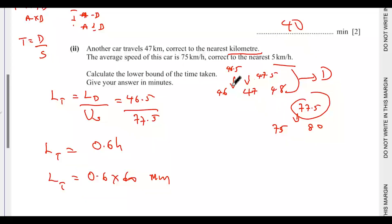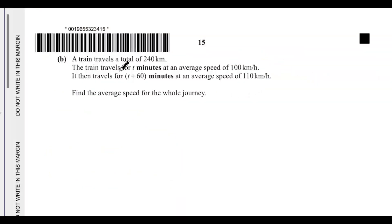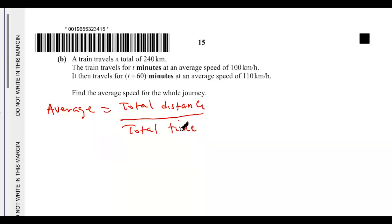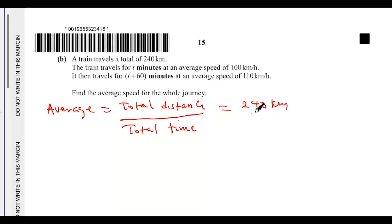Part (b): a train travels a total of 240 kilometers. The train travels for t minutes at an average speed of 100 kilometers per hour, then travels for (t + 60) minutes at an average speed of 110 kilometers per hour. Find the average speed of the whole journey. Average speed equals total distance over total time taken, and the total distance is 240 kilometers.